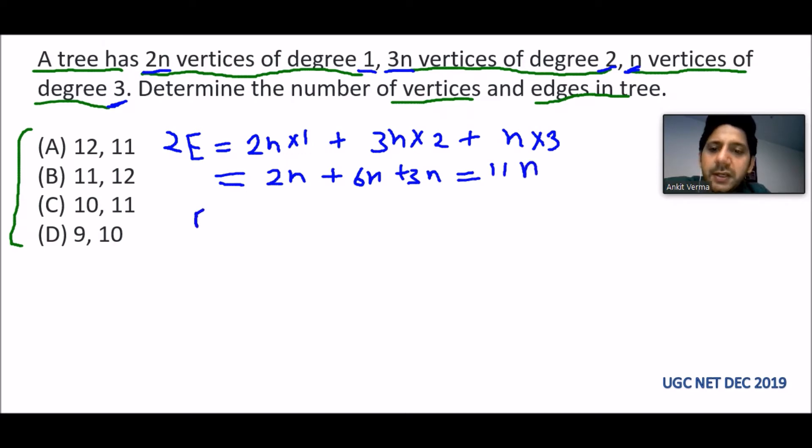So E will equal 11n by 2. Now we know that number of vertices equals 2n plus 3n plus n, and that equals 6n.